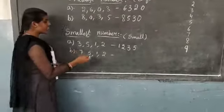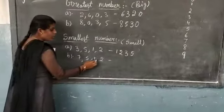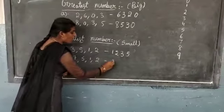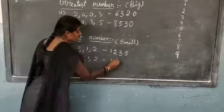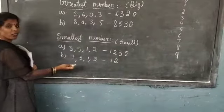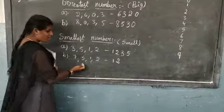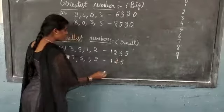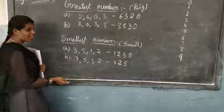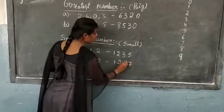Now next, same, children. Here 1 is the small number. 1 after 2 — 2 is small number. 2 after 3 — 3 not there. 4 — 4 not there. 5 — is 5 there? Yes, children, then write 5. 5 after 6 — 6 not there. 7 — 7 is there. Ok children.